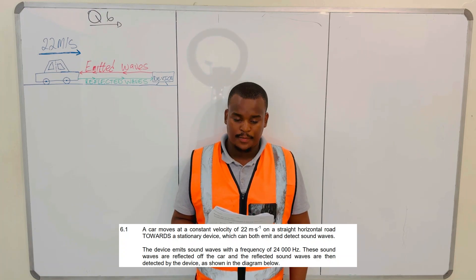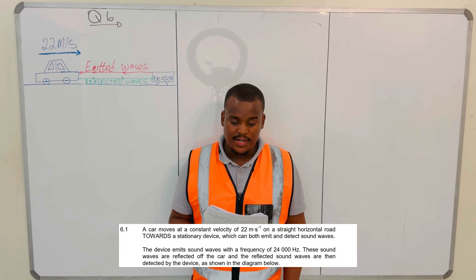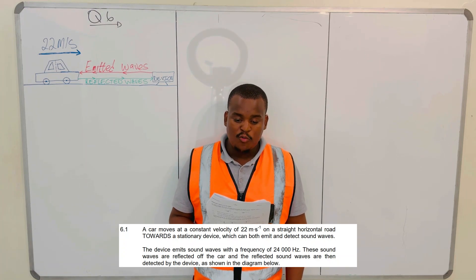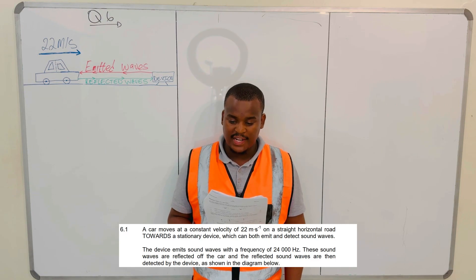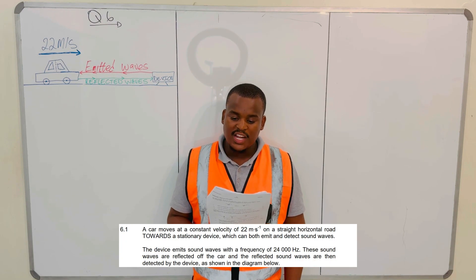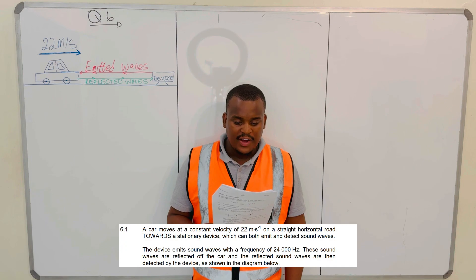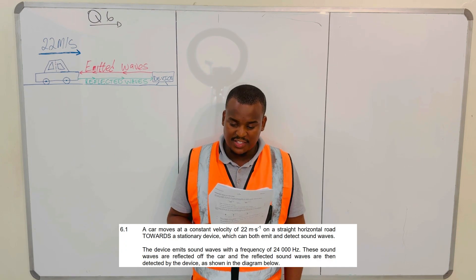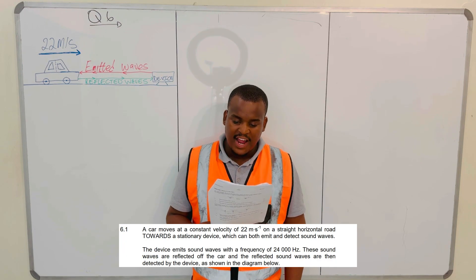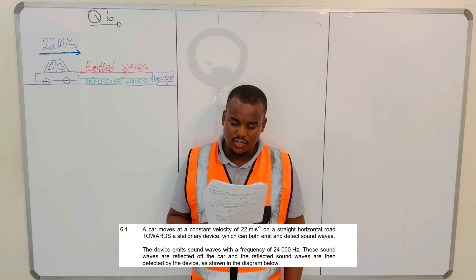We'll start at 6.1. A car moves at a constant velocity of 22 meters per second on a straight horizontal road towards a stationary device, which can both emit and detect sound waves. The device emits sound waves with a frequency of 24,000 Hz. These sound waves are reflected off the car, and the reflected sound waves are then detected by the device as shown in the diagram.